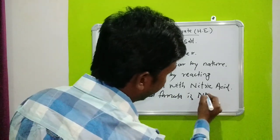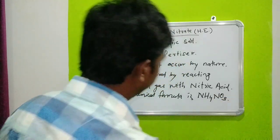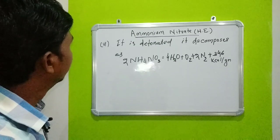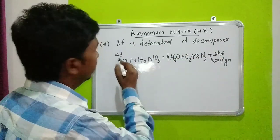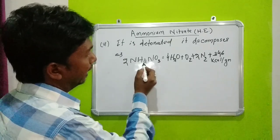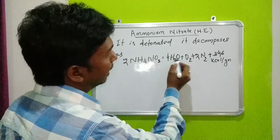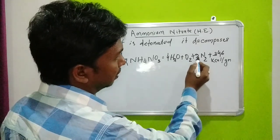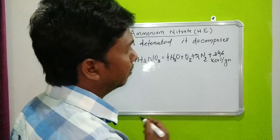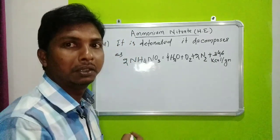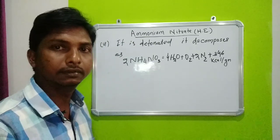Its chemical formula is NH4NO3. When it is detonated, it decomposes as: H2O + O2 + 2N2, and 3.46 kilocalories per gram of energy is generated.